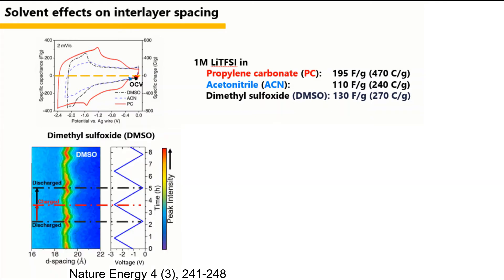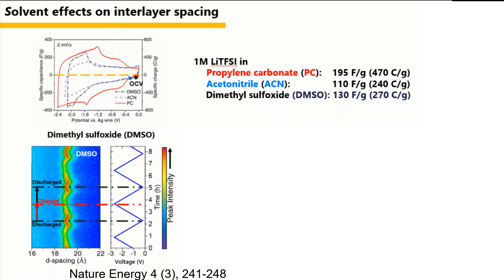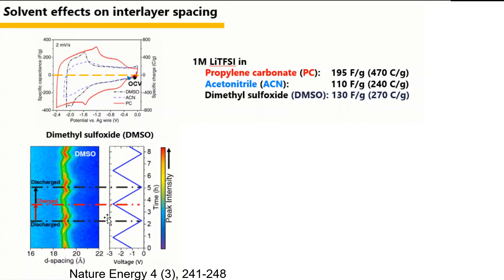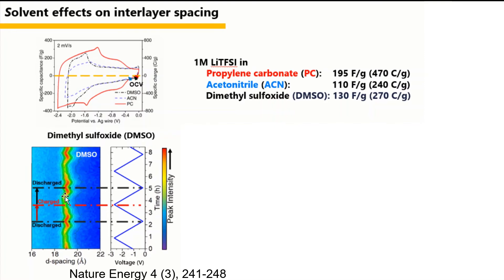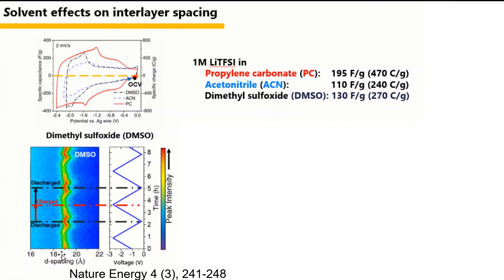To understand the differences in electrochemical behavior across the three solvents, we first perform in situ XRD. The 002 peak of the MXene, which reflects the interlayer spacing, is recorded during charge and discharge. Three complete cycles are recorded to confirm the process is reversible. For dimethyl sulfoxide (DMSO), the interlayer spacing is around 19 Ångströms. The interlayer space increases first, then decreases during charge.